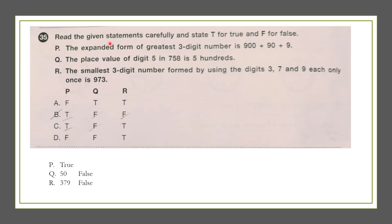Question number 35: Read the given statements and state T for true and F for false. Statement P: the expanded form of the greatest 3-digit number is 900 plus 90 plus 9. The greatest 3-digit number is 999, and 900 plus 90 plus 9 is correct — True. Statement Q: the place value of digit 5 in 758 is 500. It is at the tens place, so the place value is 50, not 500 — False. Statement R: the smallest 3-digit number formed using digits 3, 7, 9 each once is 973. But 973 is the greatest; the smallest is 379 — False. So the answer is True, False, False, which is option B.